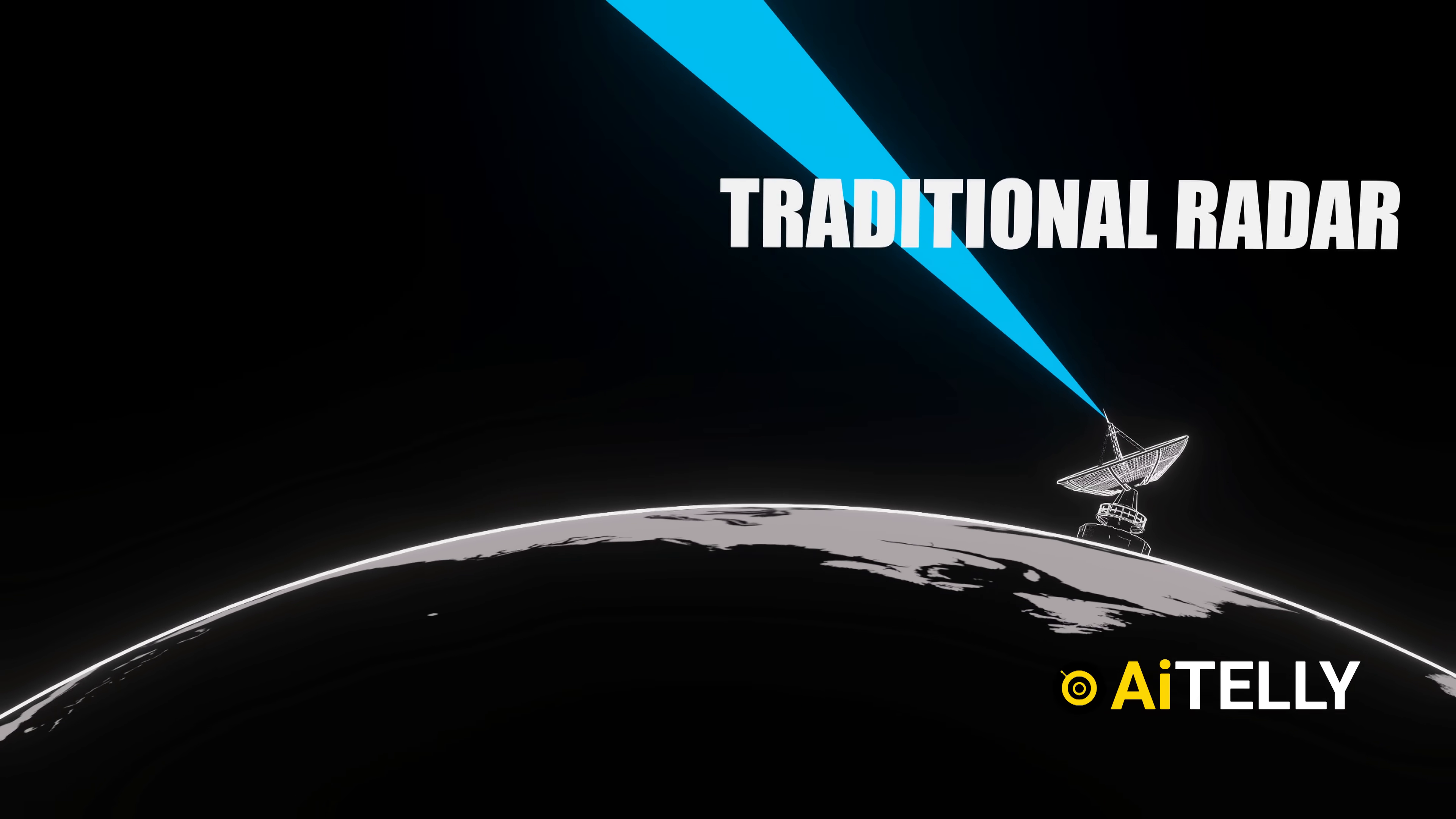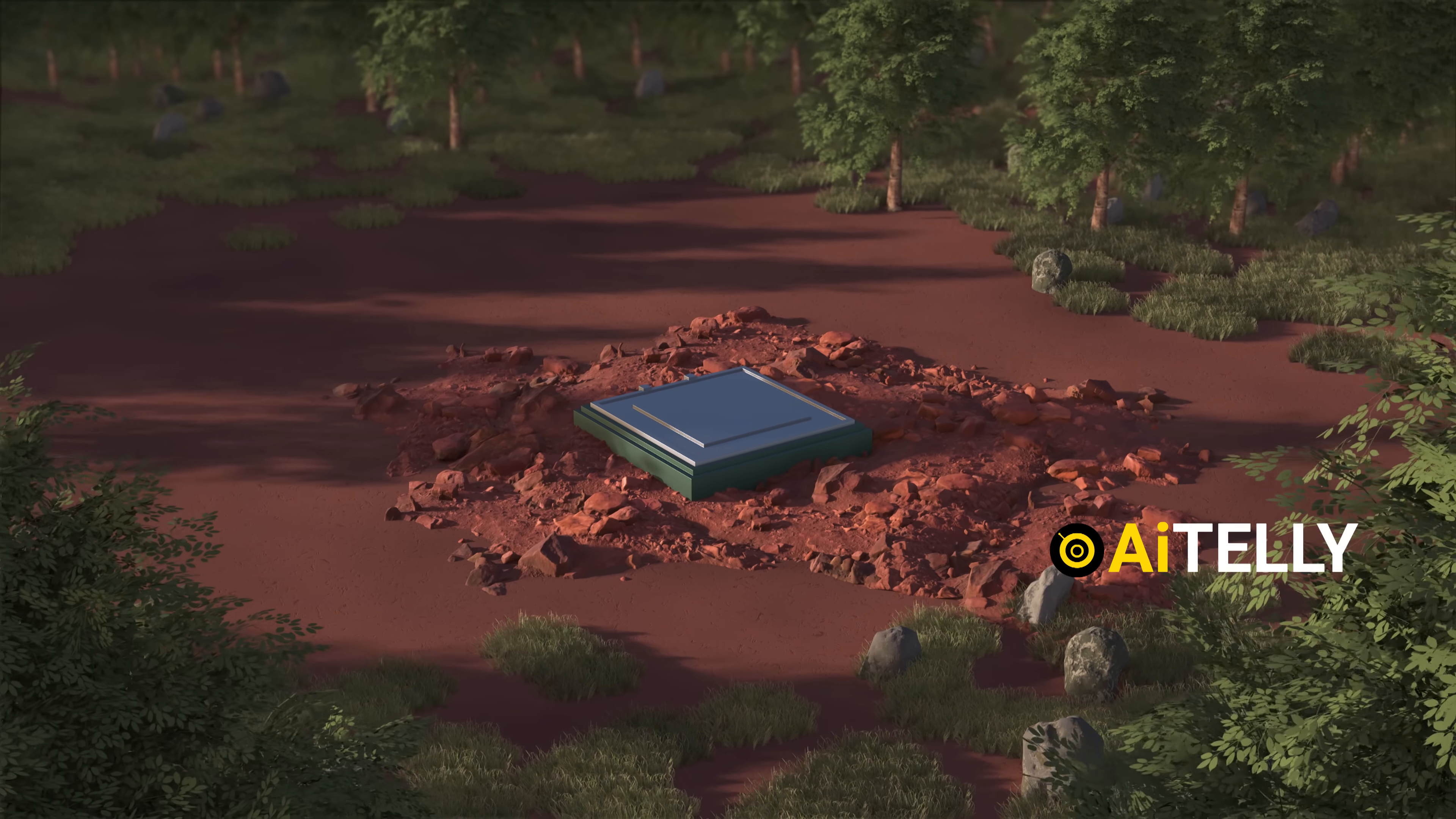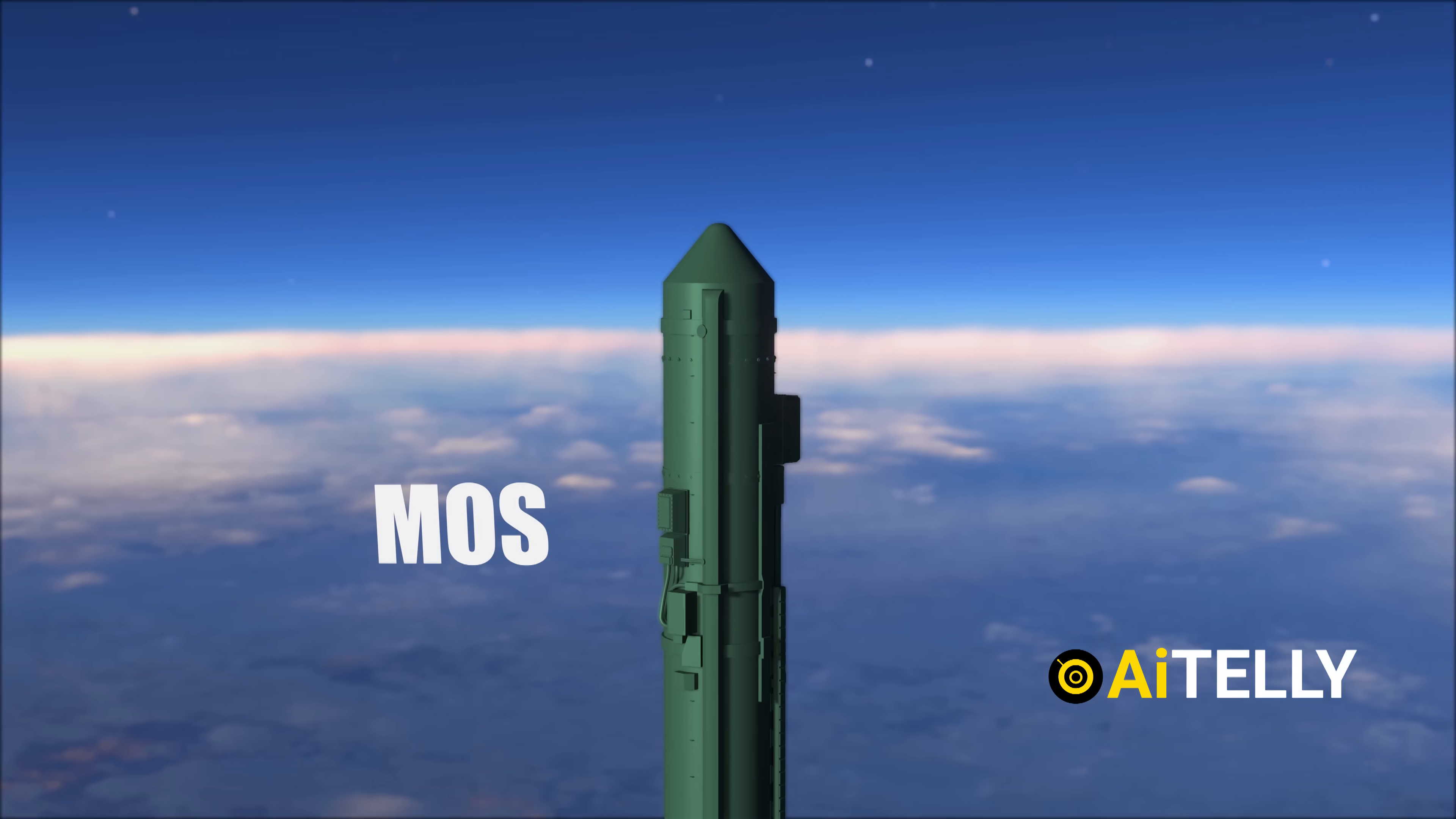While traditional radar is limited by the curve of the Earth, satellites enjoy 360-degree coverage, ensuring that no launch can escape detection. The main objective is to identify missiles soon after they launch, especially during the short but critical boost phase when a missile's engines carry it into space and it is at its most vulnerable.